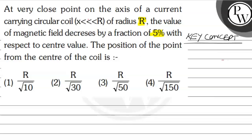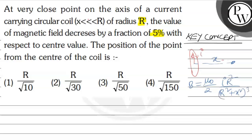We have a circular coil. Current is I, radius is R. From this coil, at some distance x along the axis, if you want to calculate the field, the formula is B = μ₀IR² / 2(R² + x²)^(3/2).